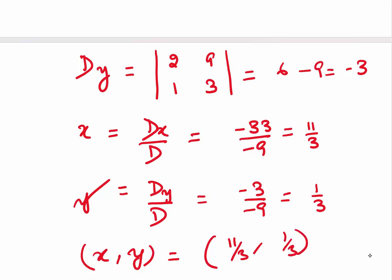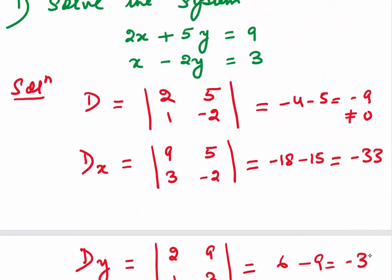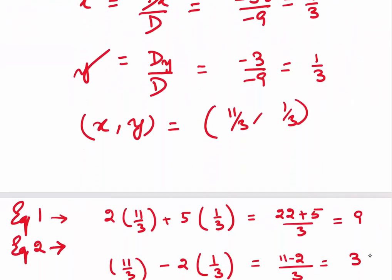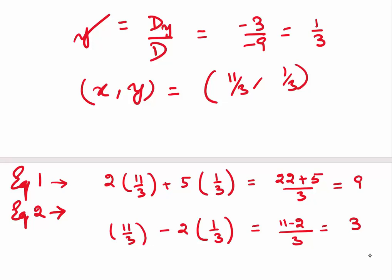If you want to check whether your solution is correct, you can substitute x equals 11 by 3 and y equals 1 by 3 into the given equations and verify you get the right-hand side. I have substituted into equation 1 and equation 2 and we get the right-hand side, so our solution is correct.